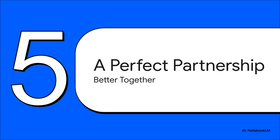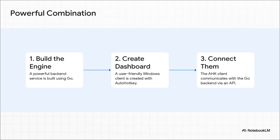Now, we've been saying Go versus AutoHotKey this whole time. But here's the big reveal — the most powerful idea of all. What if that's the wrong way to look at it? The real magic happens when you stop pitting them against each other and start thinking about how they can work together. You use Go — the F1 car — to build the powerful, high-performance engine.